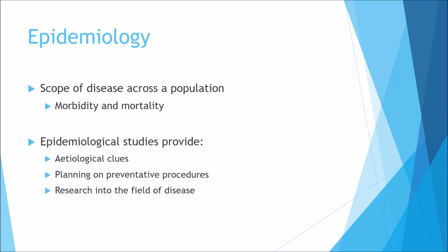Epidemiology covers the scope of the disease across the population, analysing morbidity and mortality rates. Morbidity is the rate at which the disease is prevalent in the population; mortality is how fatal the disease is — how many people are being killed by it annually. Epidemiological studies provide etiological clues by analysing links between populations. They also help plan preventative procedures — for example, with the Ebola outbreak, researchers and governments worked together to combat the disease and prevent further outbreaks, potentially promoting funding into vaccination programmes.